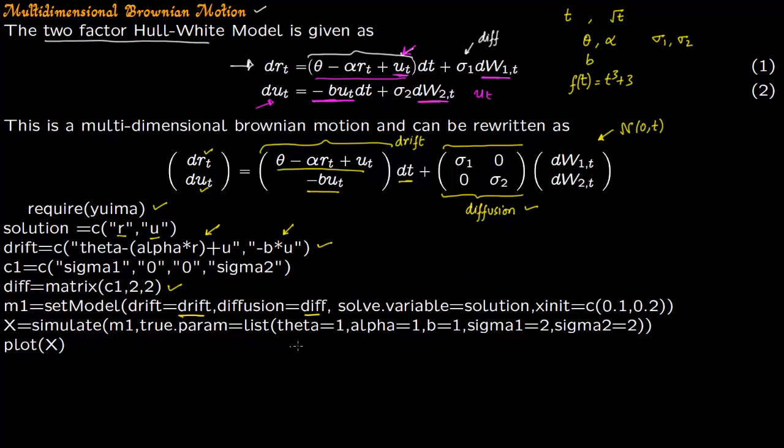Then I am going to simulate the model. So we are giving theta as 1, alpha as 1, b as 1, sigma_1 as 2, and sigma_2 as 2.